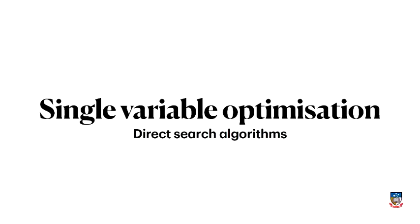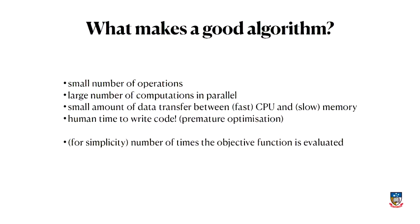Let's talk about our first type of optimization algorithm, something that's really fundamental to the course and straightforward to describe: a direct search algorithm. Before I talk about it, let's have a quick chat about what makes a good algorithm. I'm going to talk about algorithms a lot in this course. There are a number of different criteria that make something a good optimization algorithm.